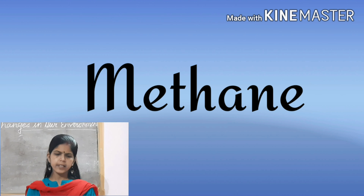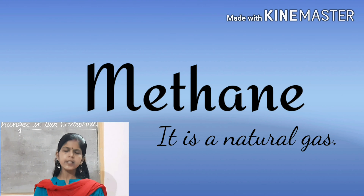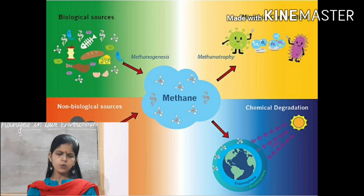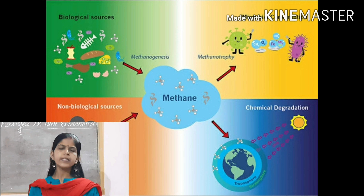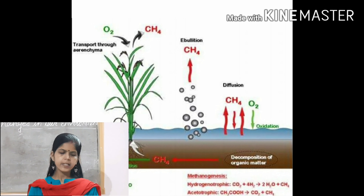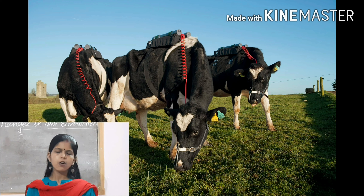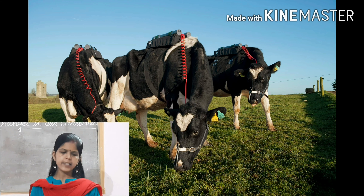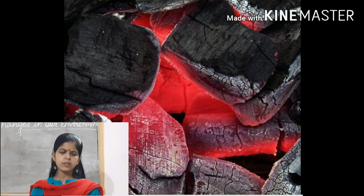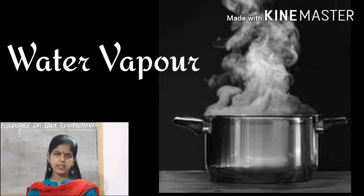Second is methane. Methane is a natural gas and is another major contributor to global warming. Methane is released from landfills, wetlands, and rice paddies. Many herbivores also release methane into the air while digesting food. Combustion of fossil fuels also results in the emission of methane gas.